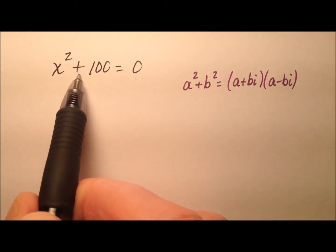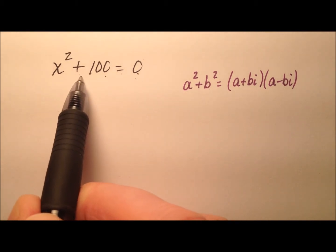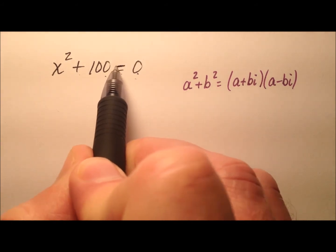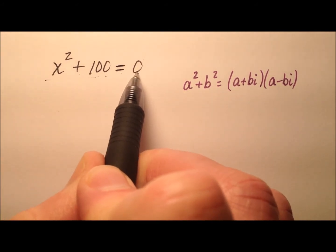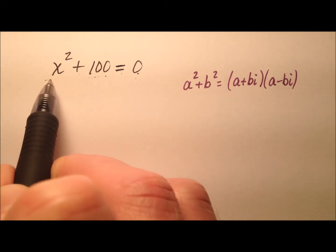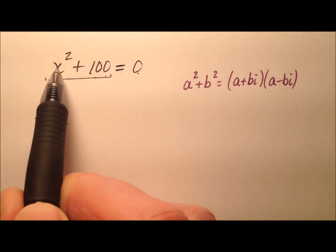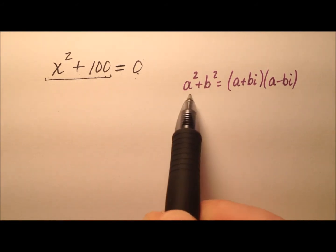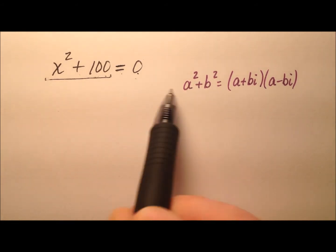So x squared plus 100 equals zero. Remember to solve equations by using factoring, we have to have the expression equal to zero. So it is equal to zero, so we're ready to factor this left side now. x squared plus 100 looks exactly like we can use this a squared plus b squared factorization.